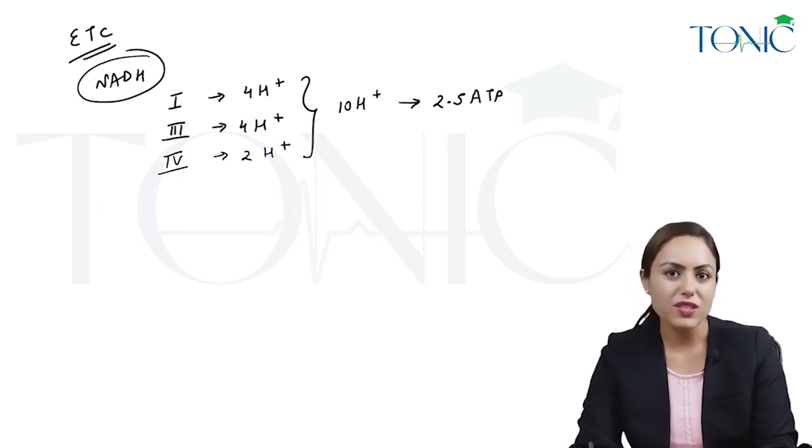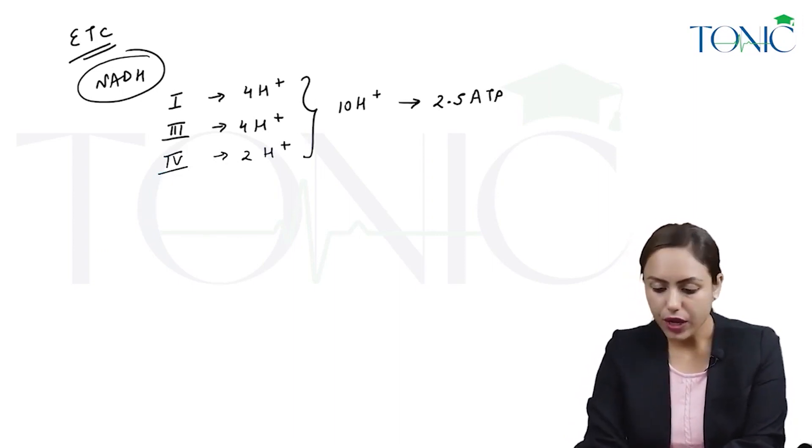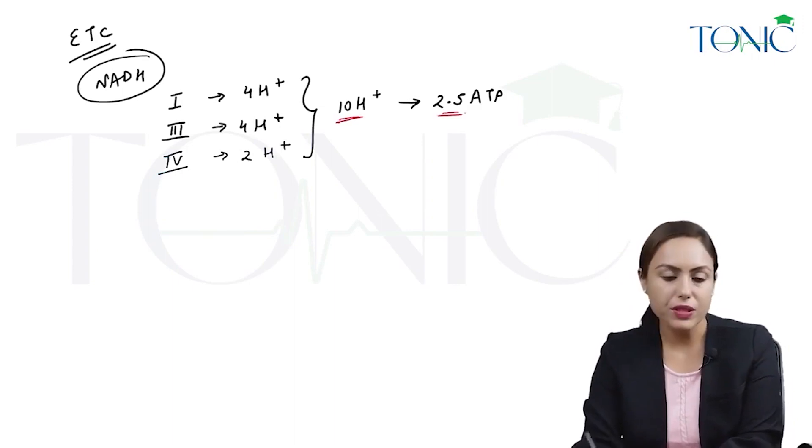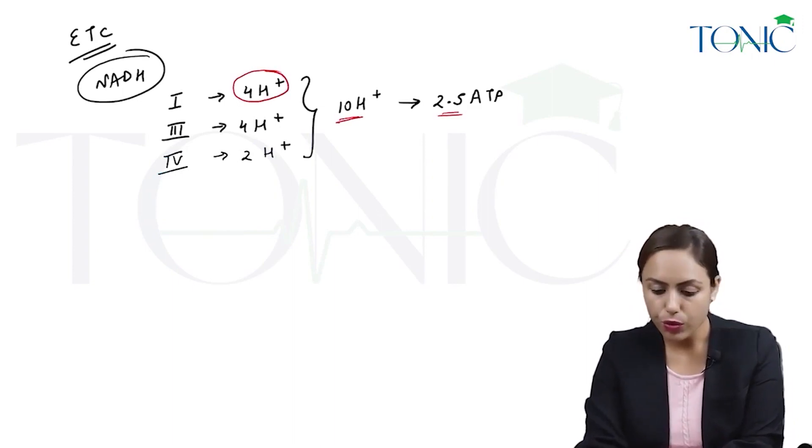The question is asked: how many ATPs are coming from complex 1? How to calculate? If 10 protons are giving 2.5 ATPs, then 4 protons are responsible for how many?